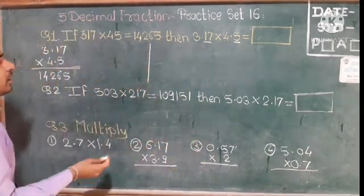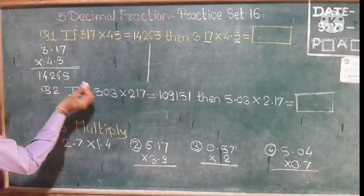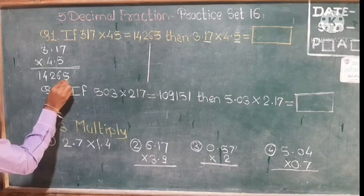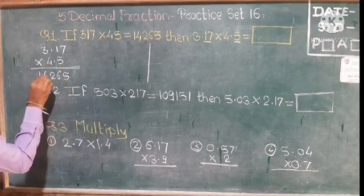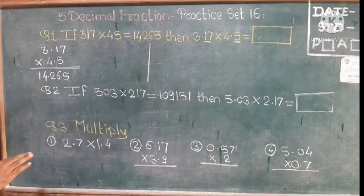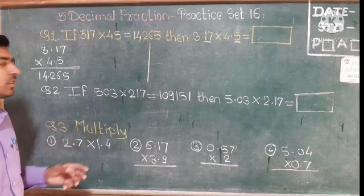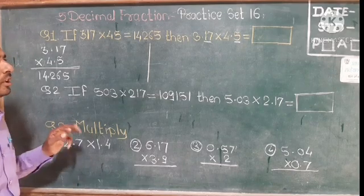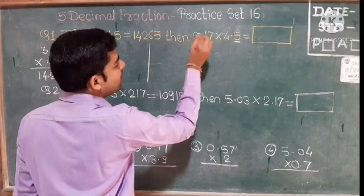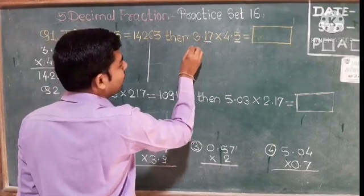If we count the digits after the decimal point, we get 3 digits. This is your answer. You can prove it. So this is the answer — we don't mind this. In decimal point, we don't have a fraction.